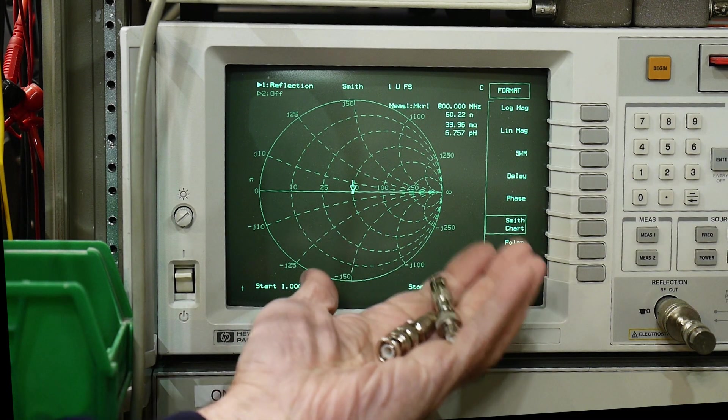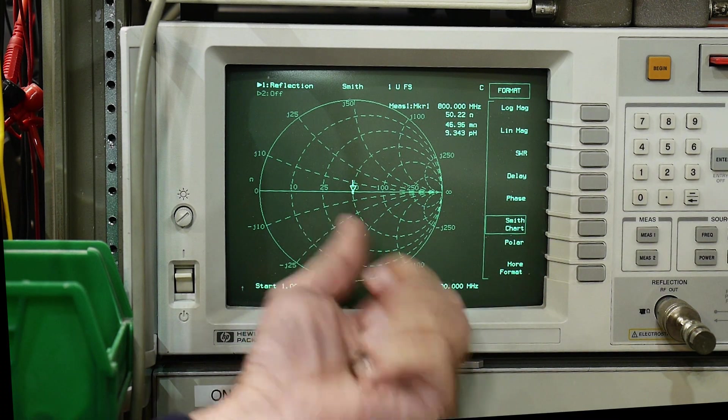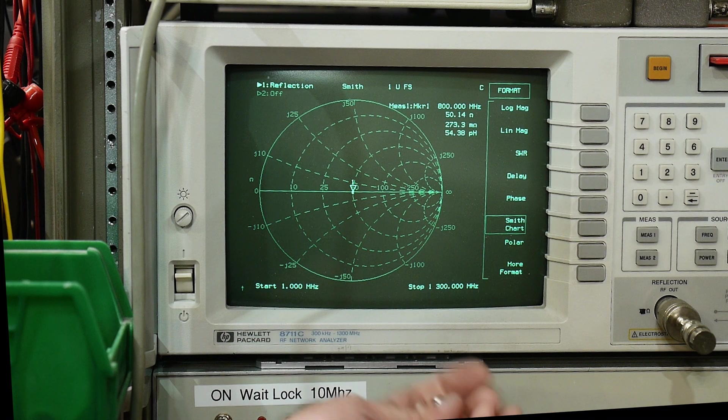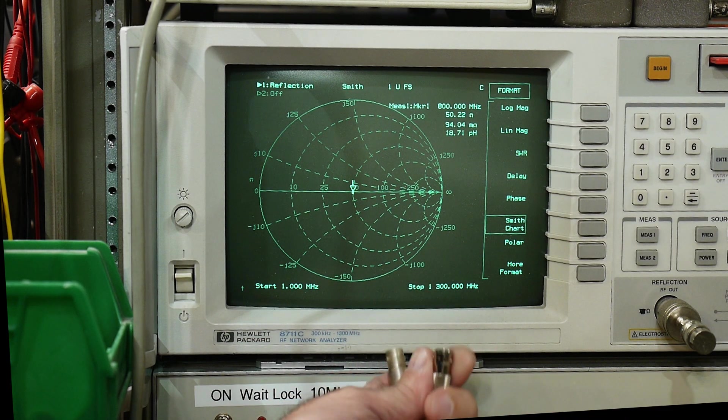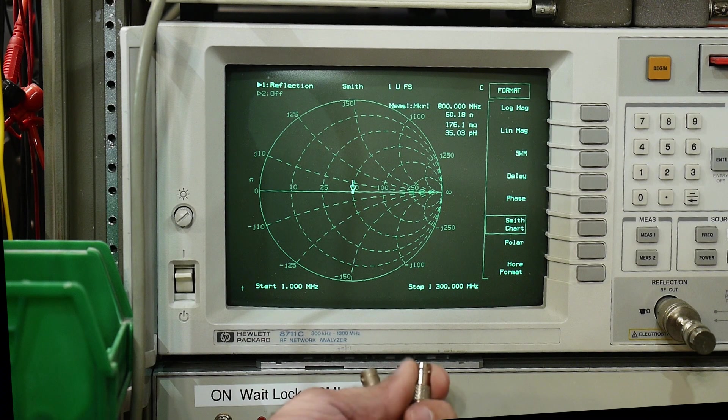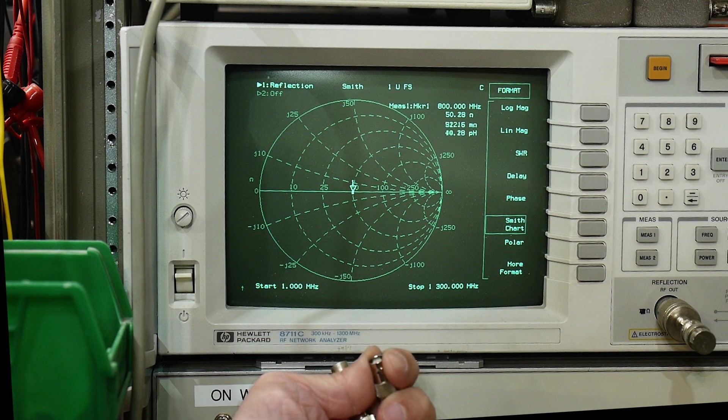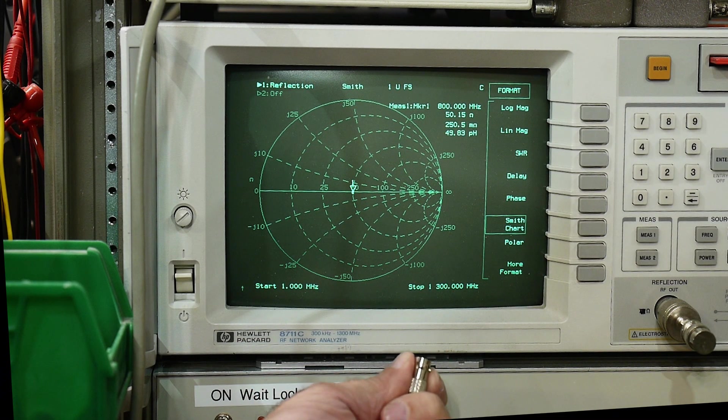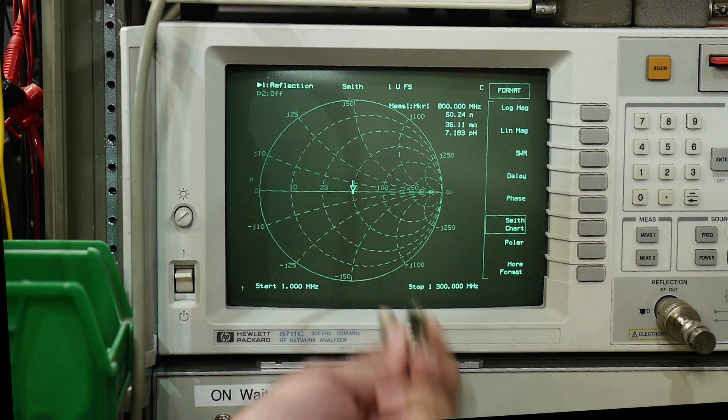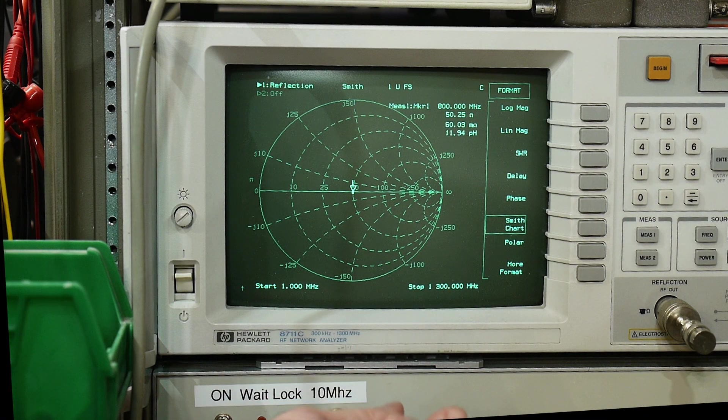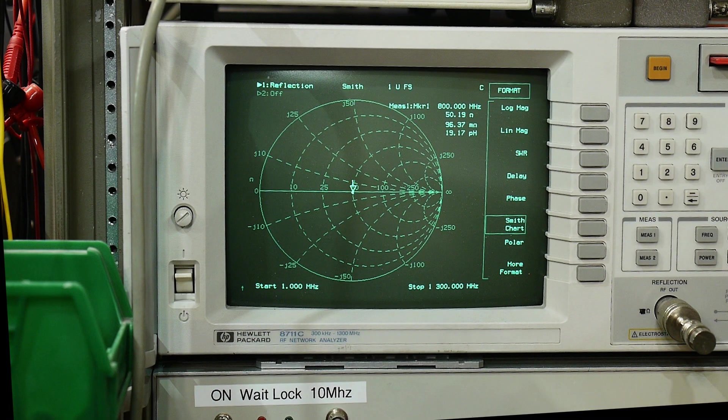So it's debatable whether these measurements are necessary for a receive antenna. Certainly, the S21 might be a better judge. Whether you need an exact match or not for receive antennas is up to debate. But yeah, there you go.